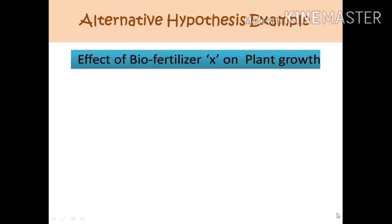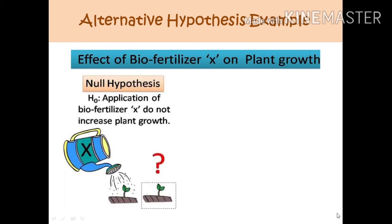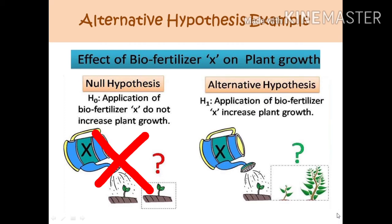Another example of an alternative hypothesis in an experimental environment: suppose you want to test the effectiveness of biofertilizer X on plant growth. The null hypothesis would say application of biofertilizer X does not increase plant growth — there is no significant change or improvement. And if this is rejected, then we can accept the alternative hypothesis stating that the application of biofertilizer X increases plant growth.